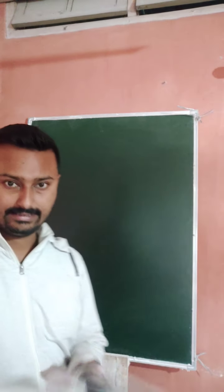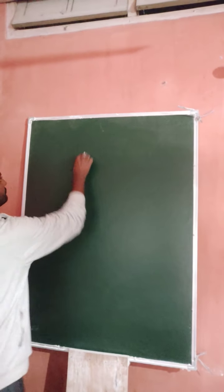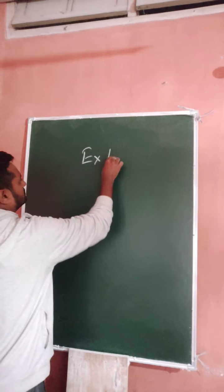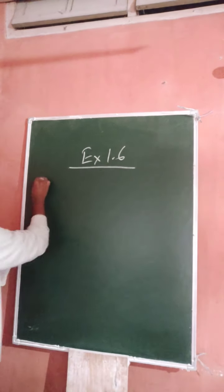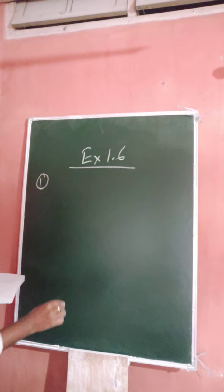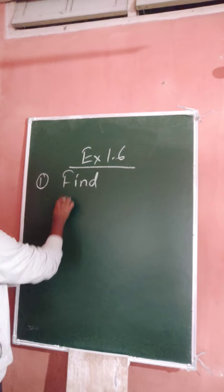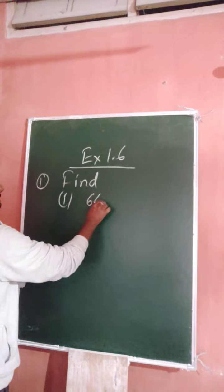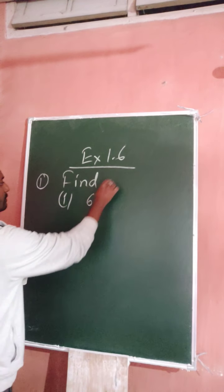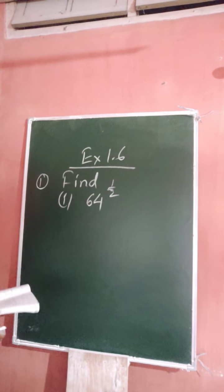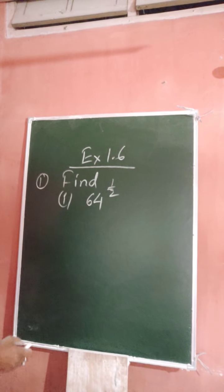Okay, so Exercise 1.6. First question is find number one: 64 to the power one by two.